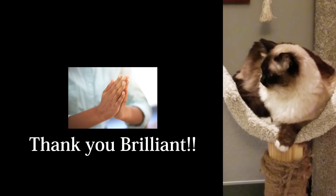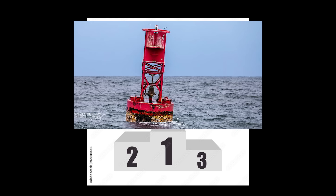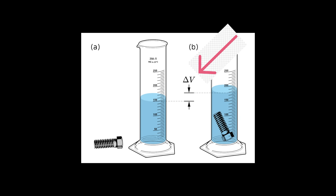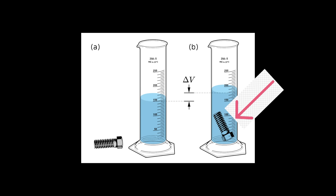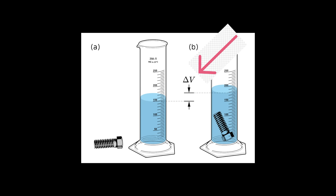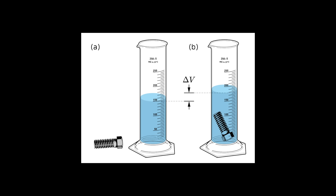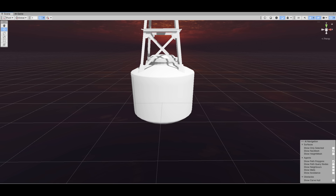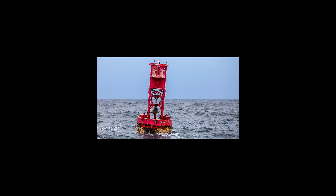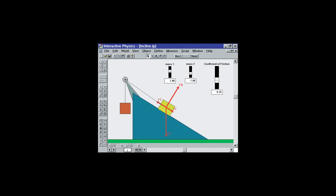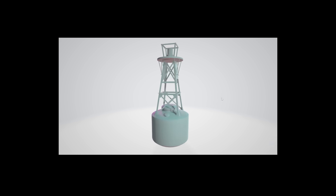Thank you so much to Brilliant for sponsoring this video. Let's start with the question that needs to be answered to even do a buoyancy simulation in the first place: how do we determine the amount of volume that our object is displacing? An object can only displace as much volume as it occupies in space. To make our lives easier, let's put a little box around an area of our model that will be the actual target of our buoyancy simulation. It's common practice to do physics simulations on simplified geometry like spheres, capsules, or cubes, instead of the real model.